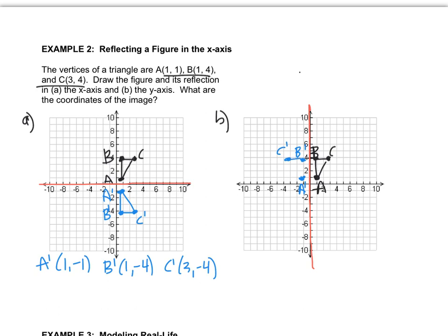There's my triangle, looks kind of sloppy I'm sorry, and now let's do our coordinates. A prime is at (-1, 1), B prime is at (-1, 4), and C prime is at (-3, 4), and you can see from the algebra rule all that happened was the x value changed signs.